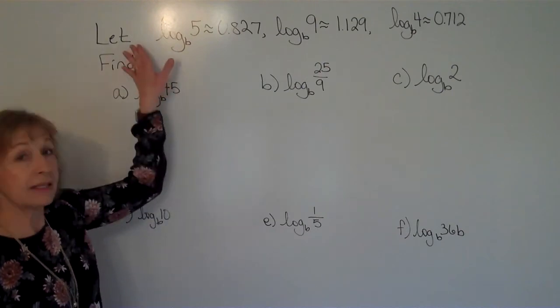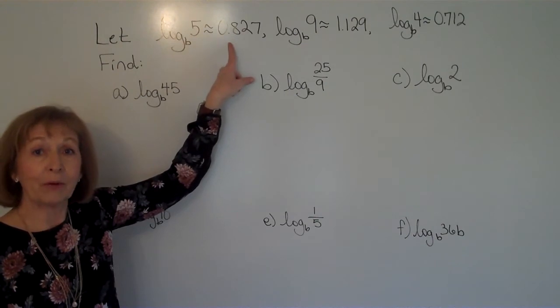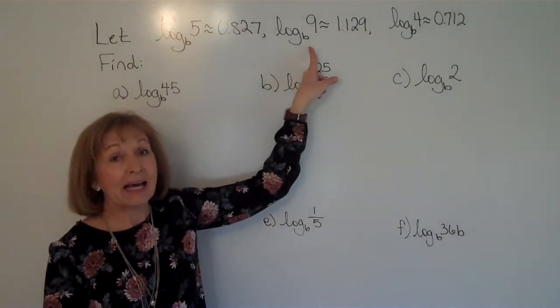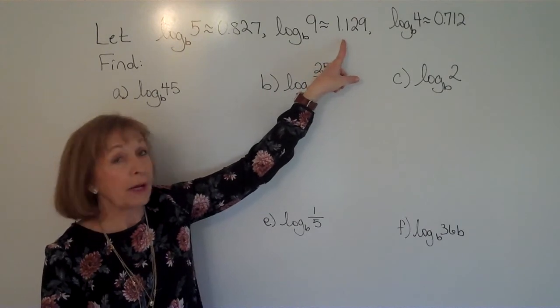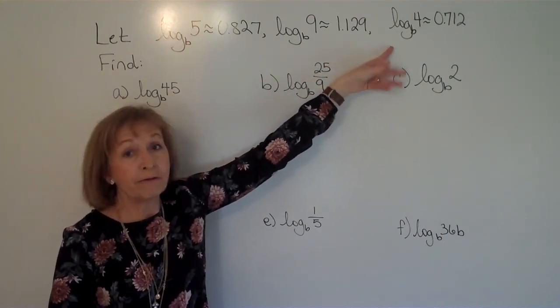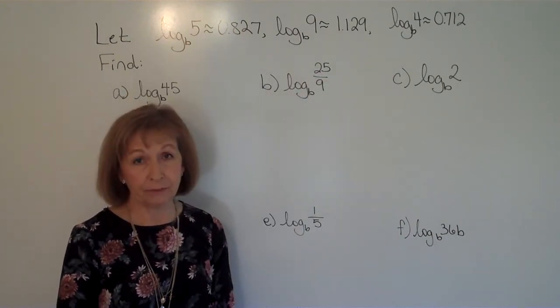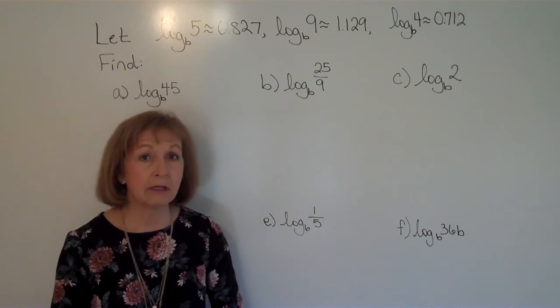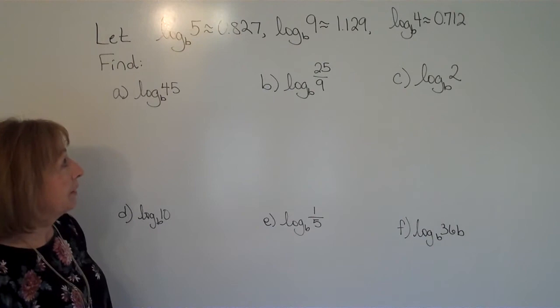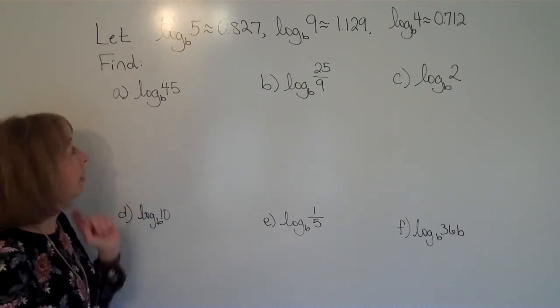So here it says, let log base b of 5 be approximately equal to 0.827, let log base b of 9 be approximately equal to 1.129, and let log base b of 4 be approximately equal to 0.712. So that's our given information. For that particular base b, we know the logarithm of those three numbers. Now here we are asked to find in these different parts.